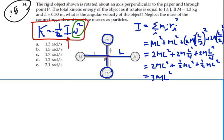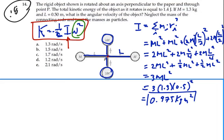So that is equal to 3 times 1.3 kilograms for M times 0.5 for L squared. And if I do that, 3 times 1.3 times 0.5 squared, I get 0.975 kilogram meter squared. That is the moment of inertia of this system about point P.